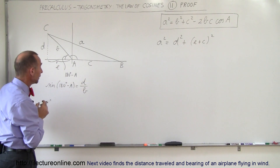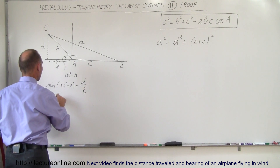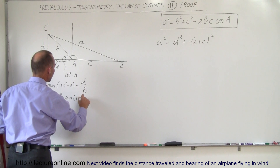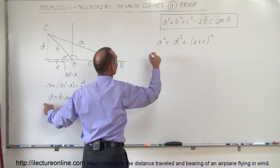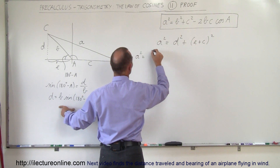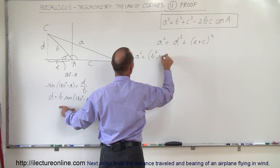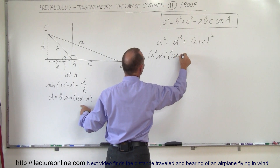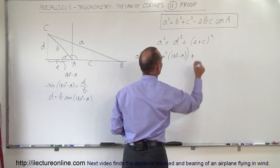This means we can solve for D: D is equal to B times the sine of 180 degrees minus A. And that can go into the expression, so we have a squared equals d squared, which is B squared times the sine squared of 180 degrees minus A, plus...